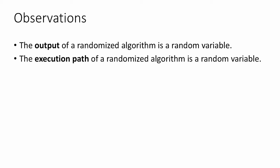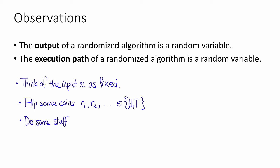Let's make a few observations about this computational model. The first observation is that the output of a randomized algorithm is a random variable. The second observation is that the execution path of a randomized algorithm is also a random variable. That is, let's think of the input to our algorithm x as fixed. And then our algorithm is going to flip some coins and do some stuff. Here h and t are going to stand for heads and tails. We can write the stuff that the algorithm does as some function, alg of the input x and also the random coins that it flips.